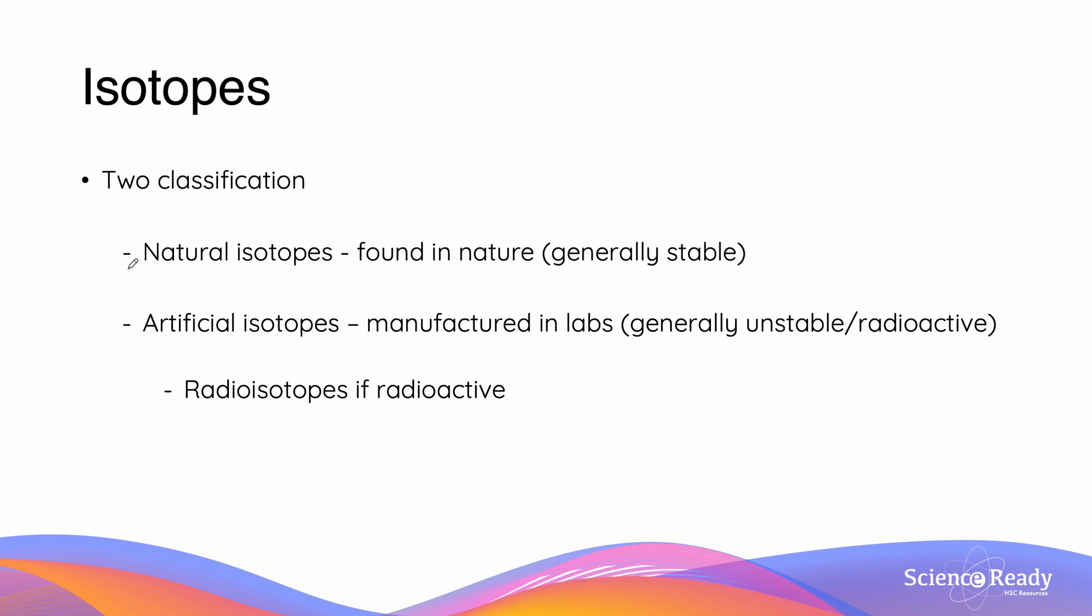There are two main classifications of isotopes. They can either be natural isotopes, which are found in nature and are generally stable, or artificial isotopes, which are manufactured in labs and are generally unstable or radioactive.